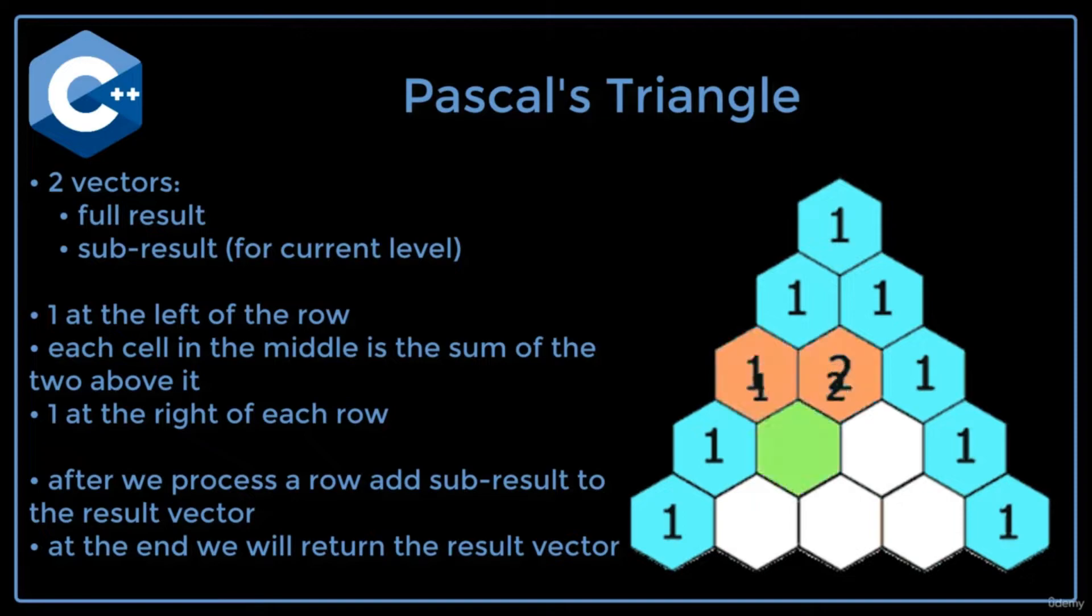To solve this problem, I am thinking we have two vectors. One will be the full result we return, and the other will be a subresult that holds the numbers for the level we are currently processing.